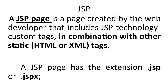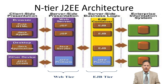JSP files have the extensions .jsp and .jspx. JSP is an embedded programming language where we can include HTML and XML tags along with JSP code. JSP is very important and plays a very important role in the entire J2EE architecture.